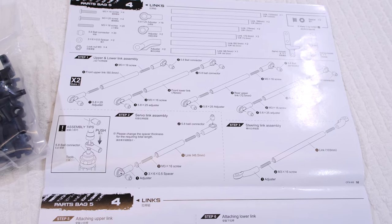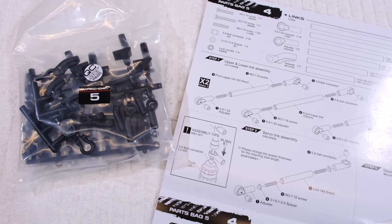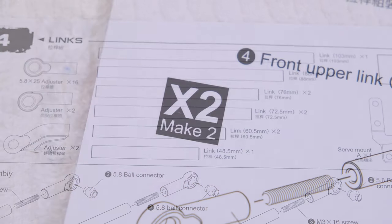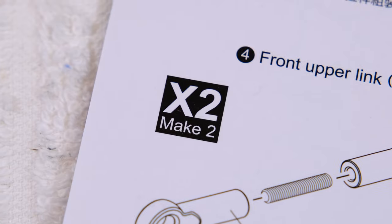Step 4 is to build the links and the parts are in bag 5. The length of each link is well shown in the instructions. And each link must be built twice.